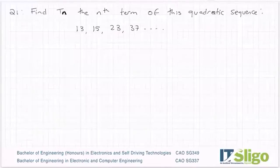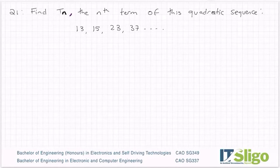Alright, let's have a look at this quadratic pattern. Question one: find Tn, the nth term of this quadratic sequence: 13, 15, 23, 37.